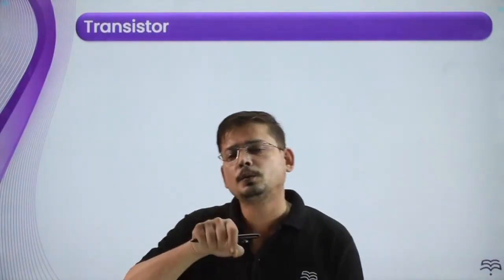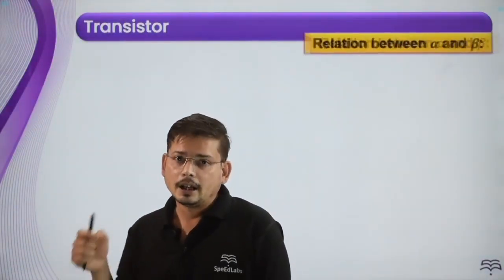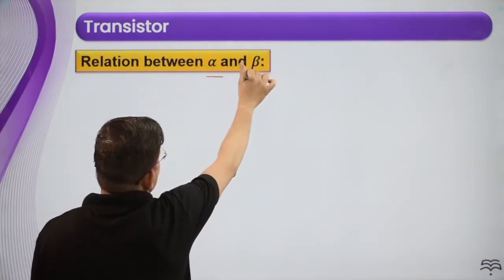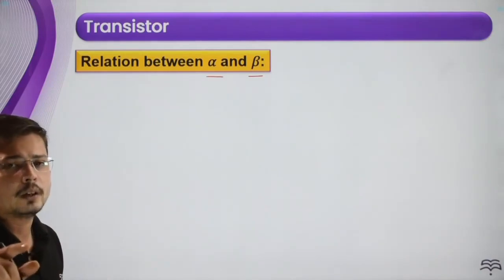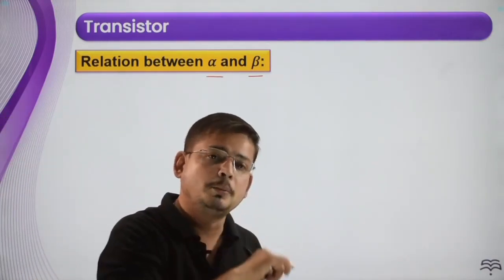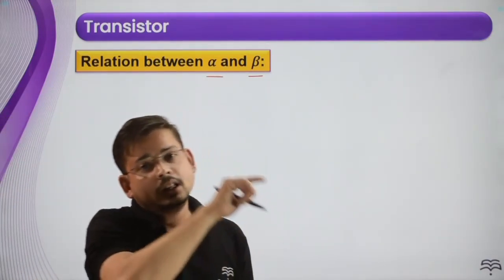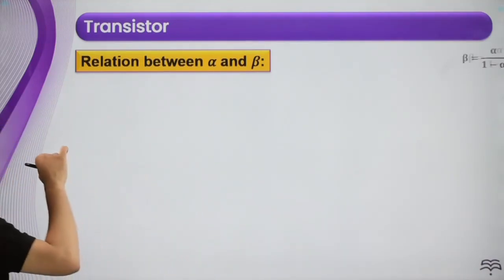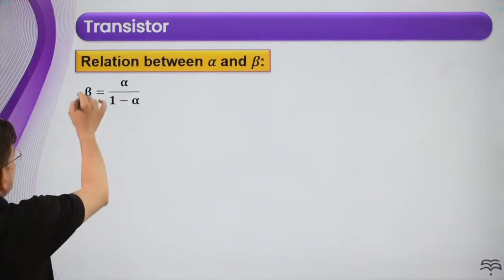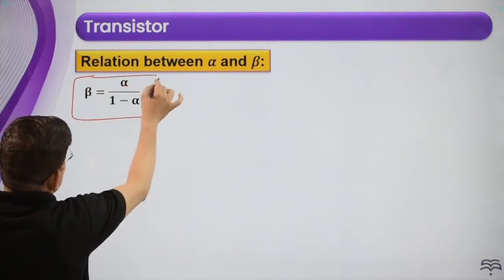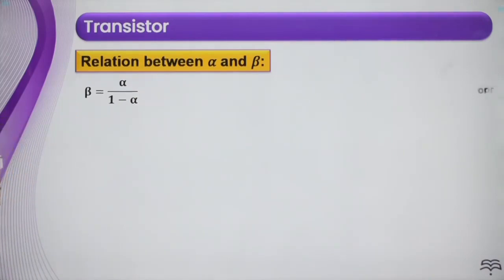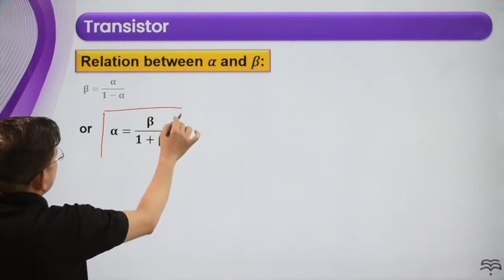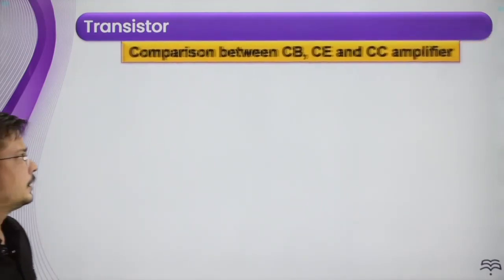Now we talk about alpha and beta. Alpha is the current gain in the common emitter amplifier and beta is the current gain in the common base amplifier. The relation is: beta equals alpha divided by (1 minus alpha), and alpha equals beta divided by (1 plus beta).